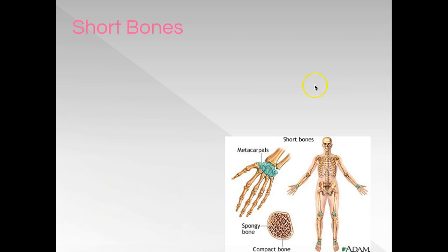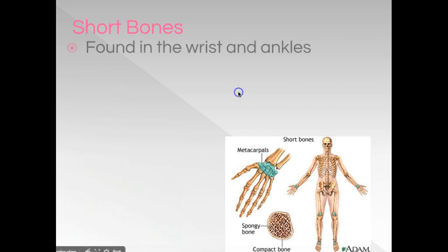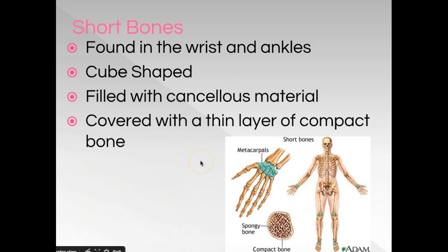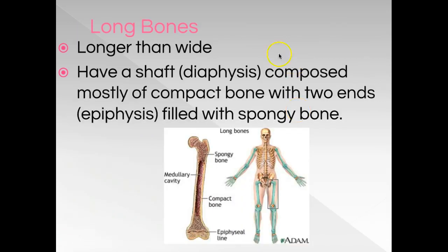For the test, I want you to know two things about different bone types: where they're found and their descriptions. Short bones are cuboidal in shape and are found in the wrist and ankles, as well as the patella — the kneecap. They are typically cube-shaped, filled with cancellous material — spongy bone — and have a thin layer of compact bone on the outside. They're more porous, which gives them greater shock absorption.